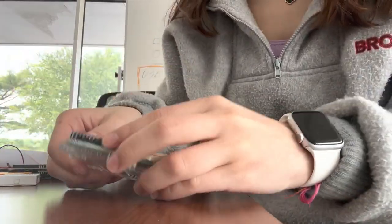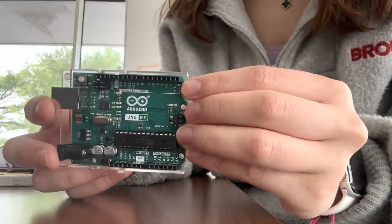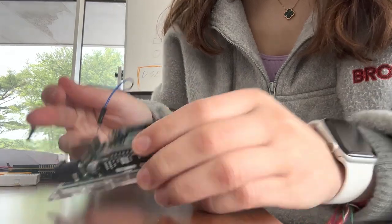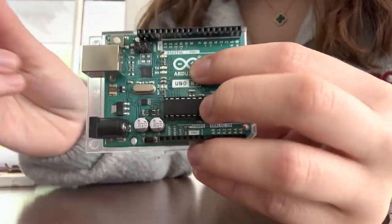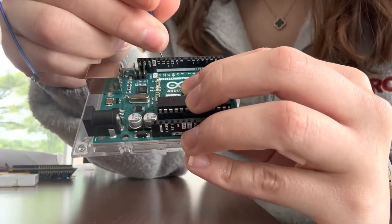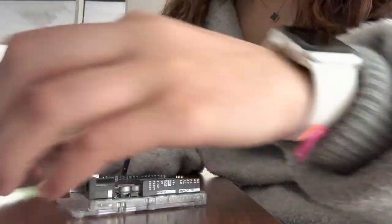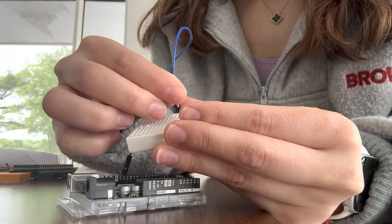First you want to take your Arduino Uno and connect a wire to the digital side, reaching the digital side D12, number 12, and then connect the other end to anywhere on your breadboard.